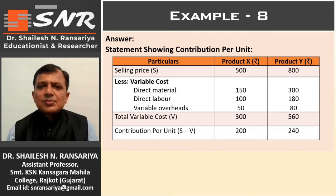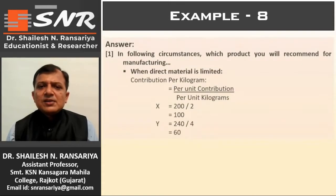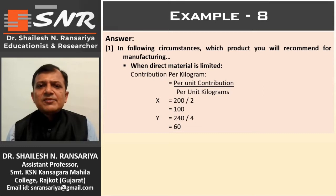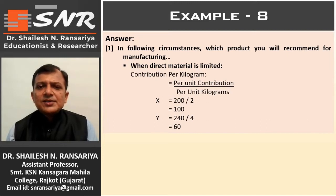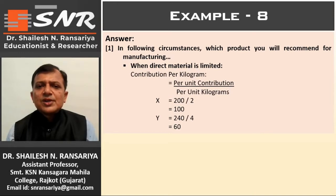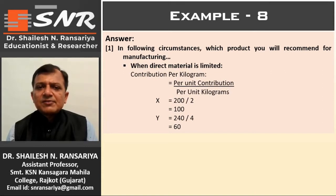Now we calculate contribution as per the key factor. When direct material is the key factor, we calculate contribution per kilogram. Contribution per kilogram equals per unit contribution divided by per unit kilograms required. For Product X: 200 divided by 2 kg = rupees 100. For Product Y: 240 divided by 4 kg = rupees 60.